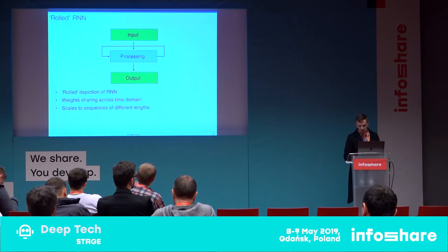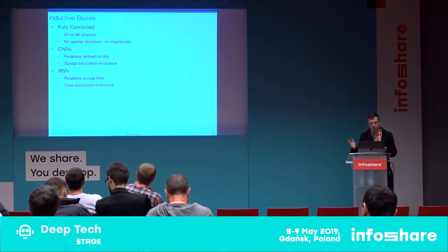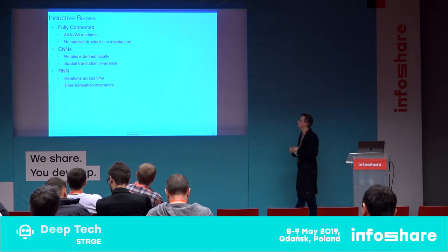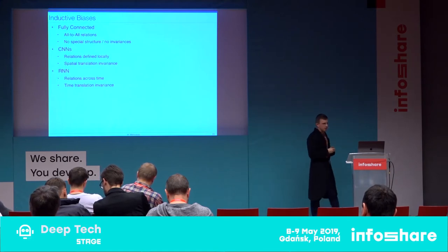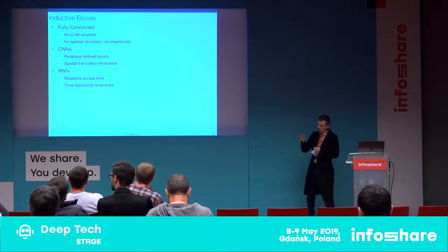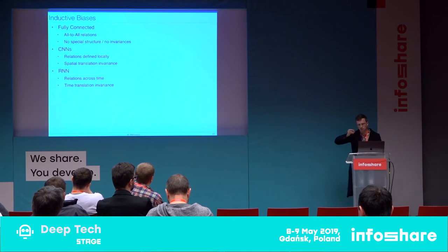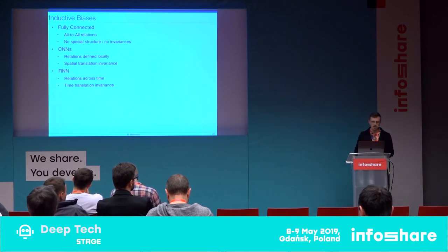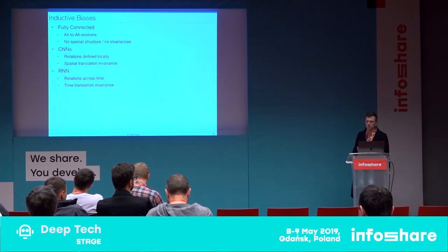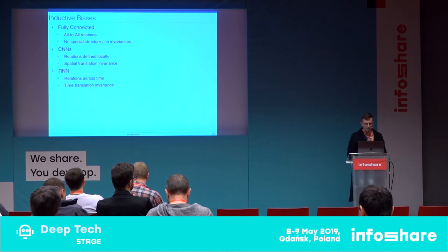To summarize the inductive biases so far: fully connected is about all-to-all relations with no special invariances or structure. Convolutional neural networks involve locally defined relations and weight sharing across the spatial structure. Recurrent neural networks have relations defined across time with time translation invariance.